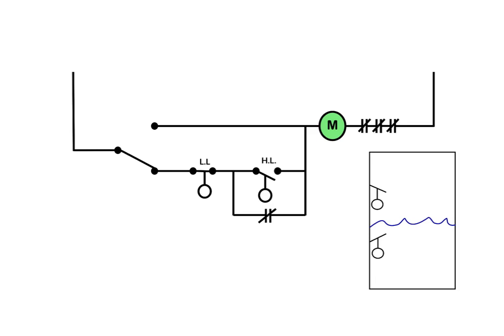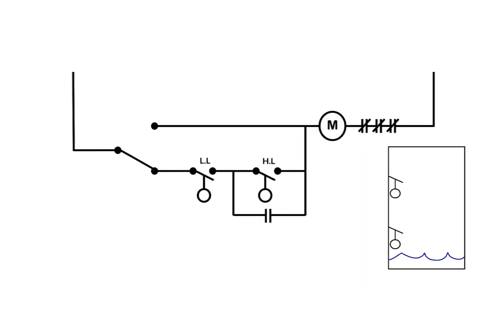And as we now see, once our low-level switch drops down, once the level has dropped below the low-level switch and it drops out, that basically kills the whole circuit. This pump de-energizes, or the starter de-energizes, which stops the pump. It opens the normally open contacts back to its regular state.